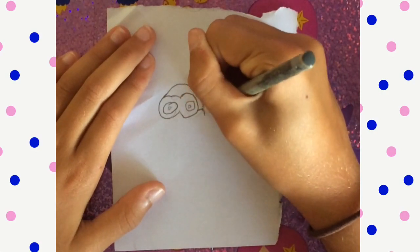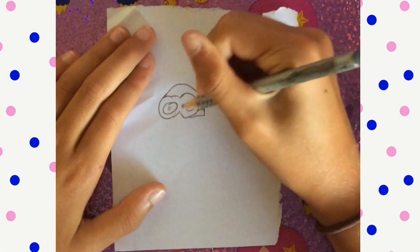Next you will draw a line connecting to the glasses and then you draw a square like that.